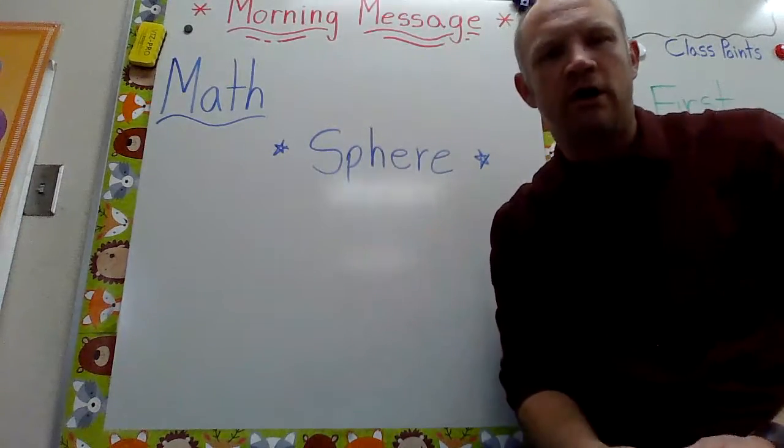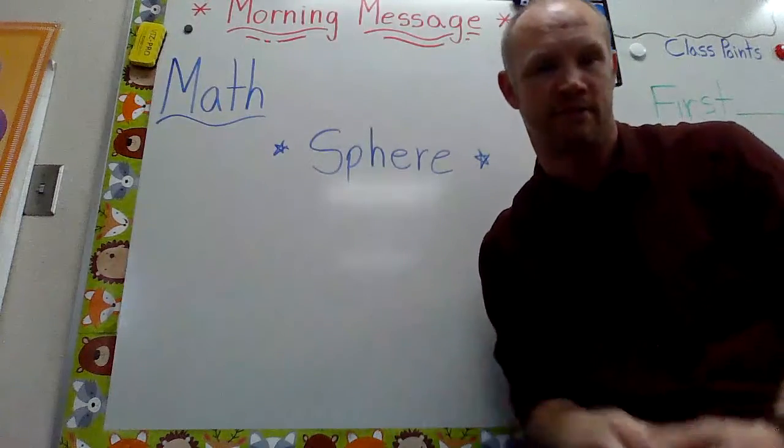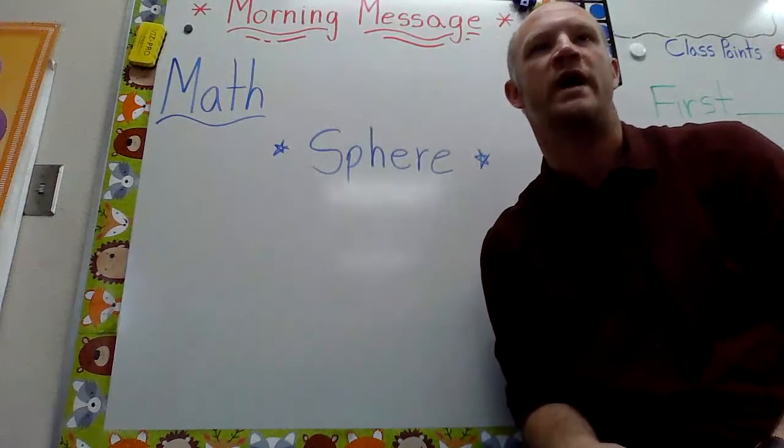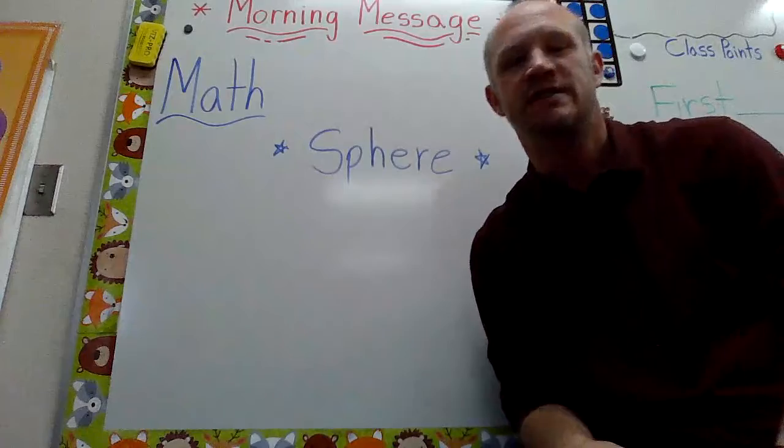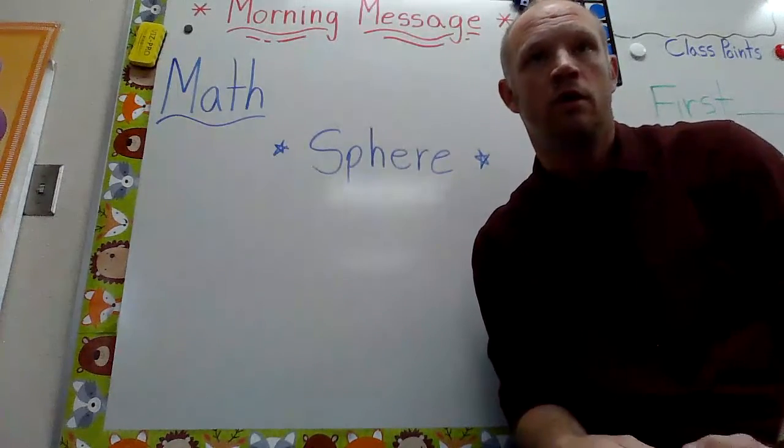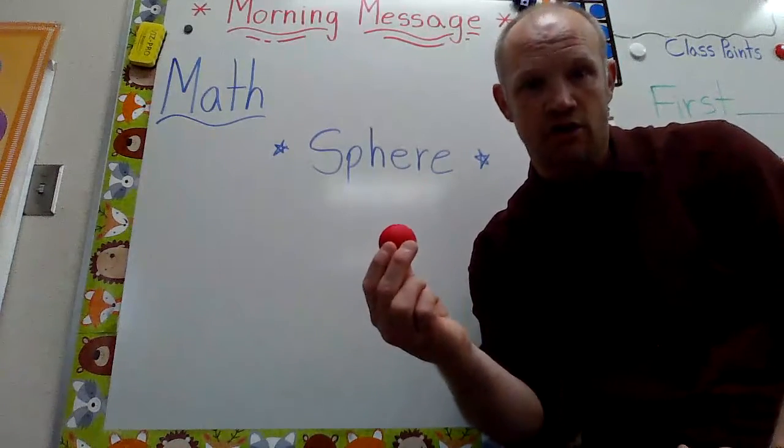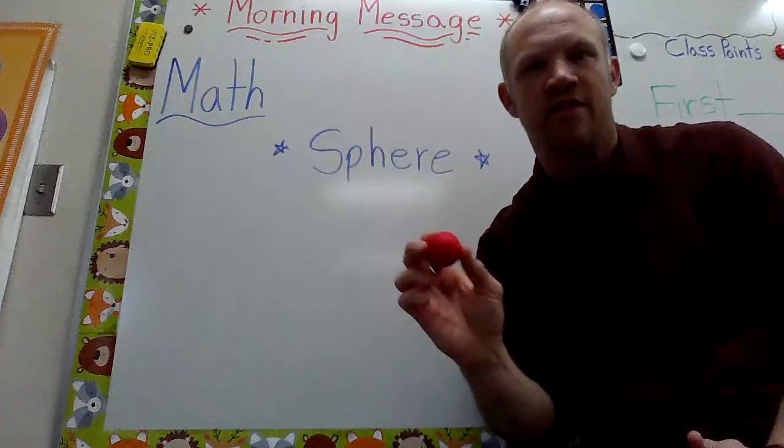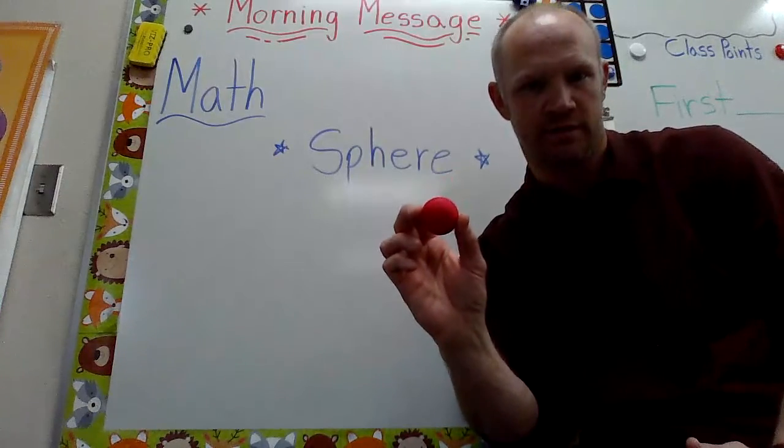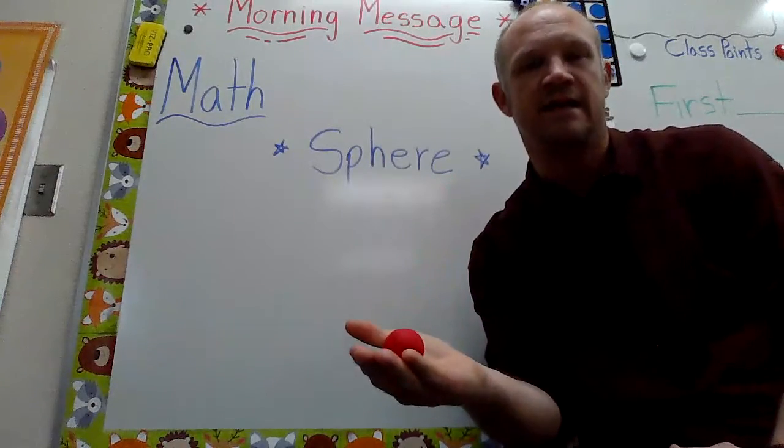Now we talked about different ways to describe solid shapes. One of those ways was to describe their sides. Now when we're describing a solid shape we don't say sides, they have special math words.